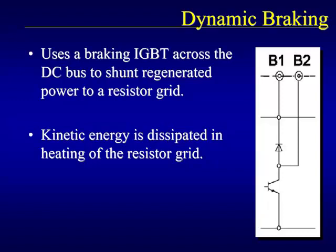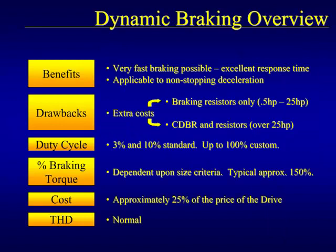Dynamic braking allows the motor to regenerate power back to the drive. As the DC bus voltage rises, a transistor turns on allowing additional DC bus power to be dissipated onto a resistor grid. Dynamic braking is an excellent method because of the available braking times and because it applies to deceleration as well as complete stops. Duty cycles and braking torques can be determined by the user. The major drawback is added cost — on smaller units, only resistors are required, but on larger units, both resistors and braking transistor units are required. This additional cost can be up to 25% of the drive price.